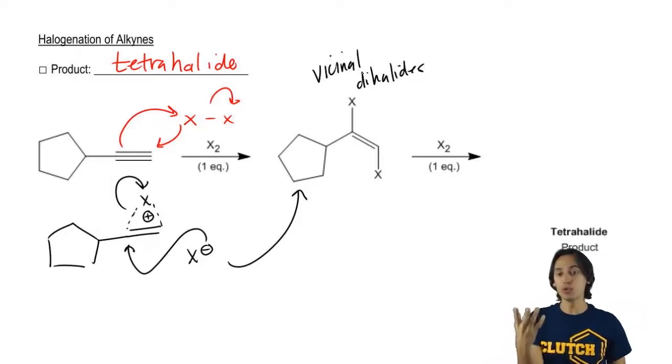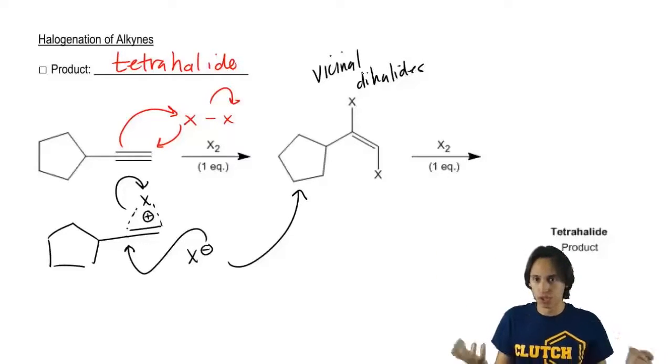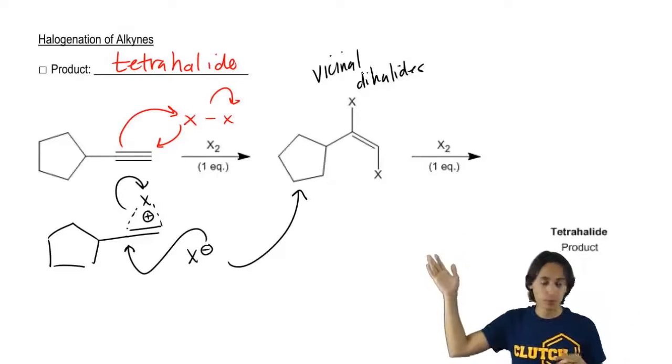But what if I said two equivalents, one plus one? Or how about if I just said excess, meaning more than one? Then I would react it again because I still have a double bond.